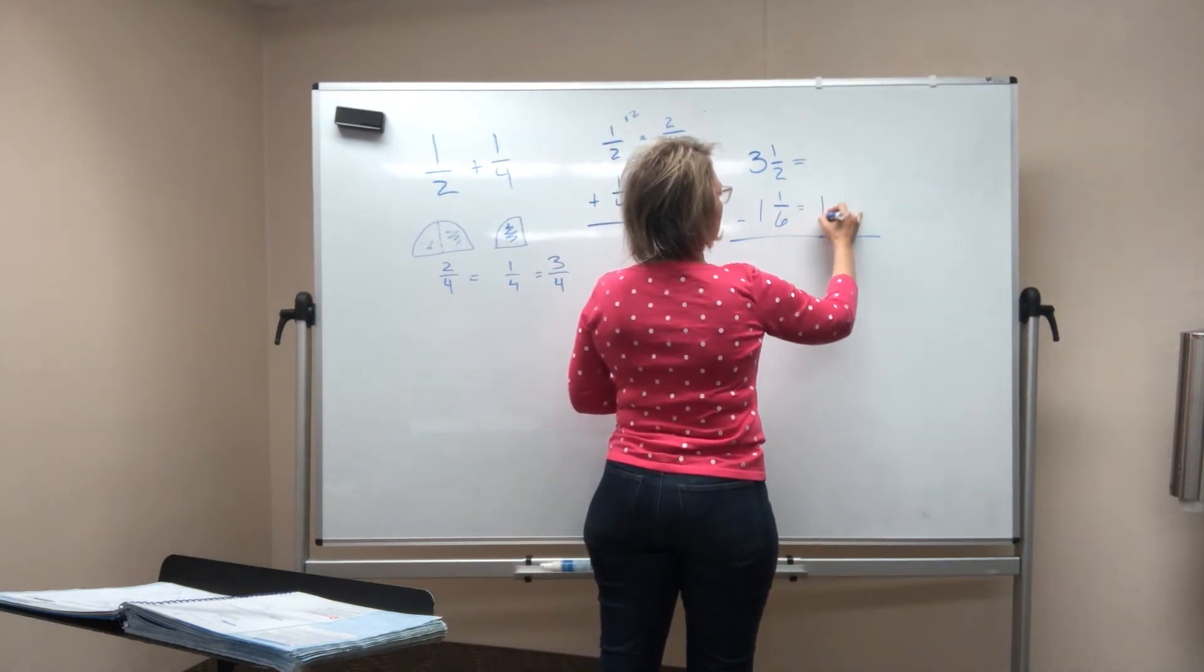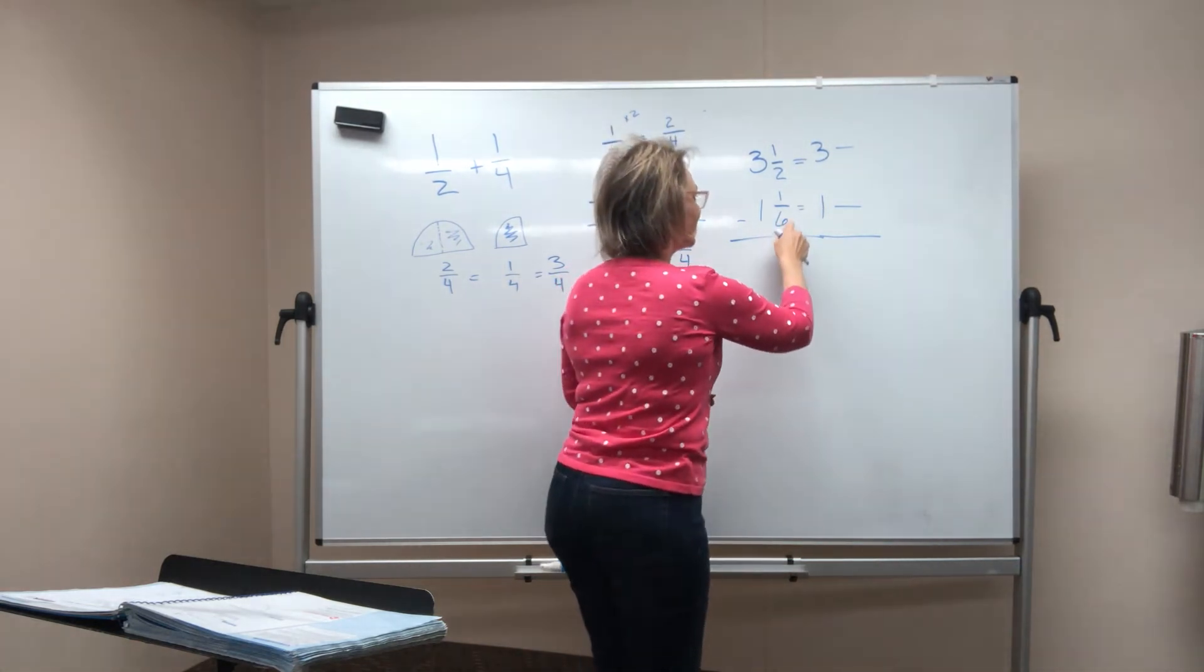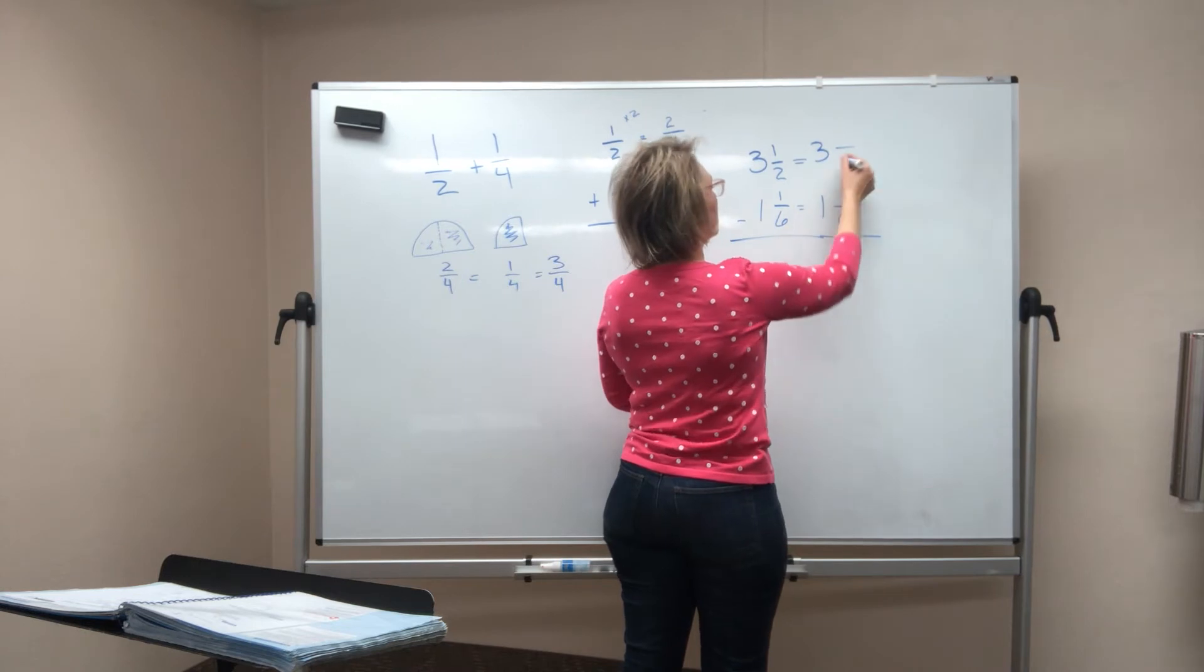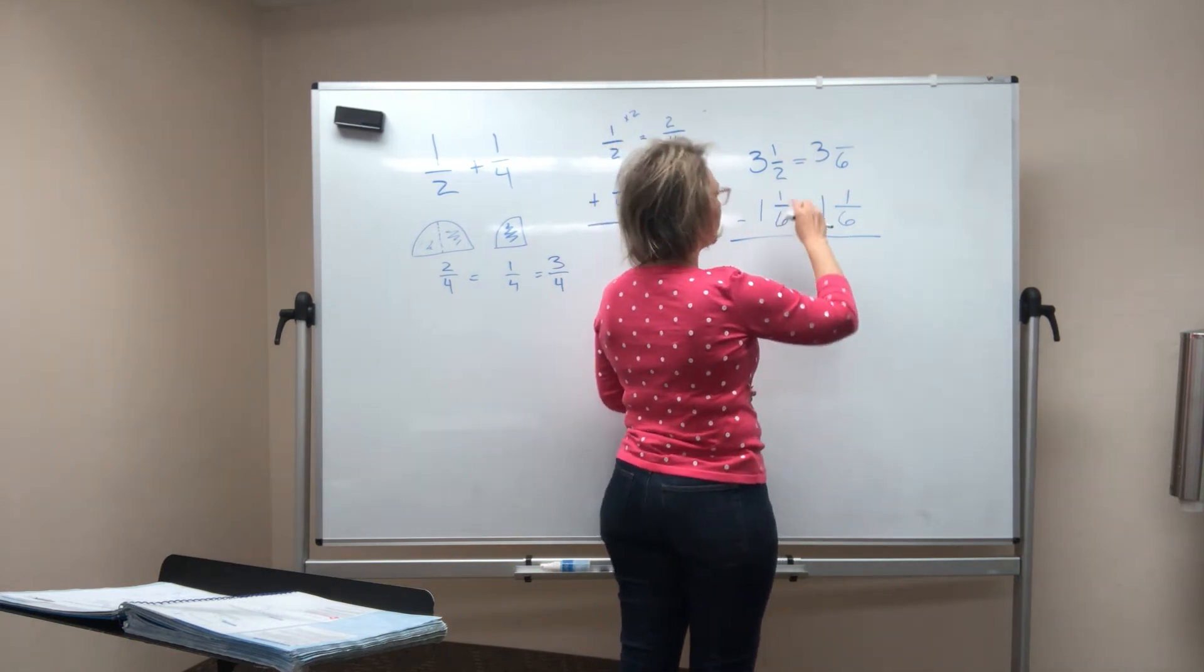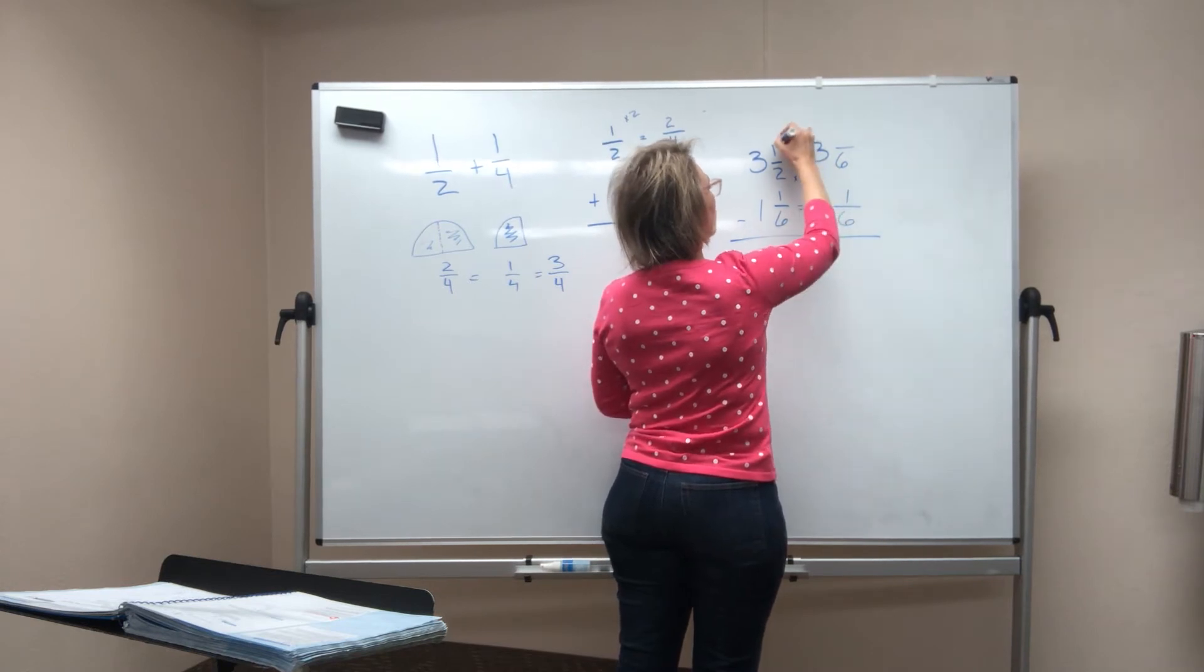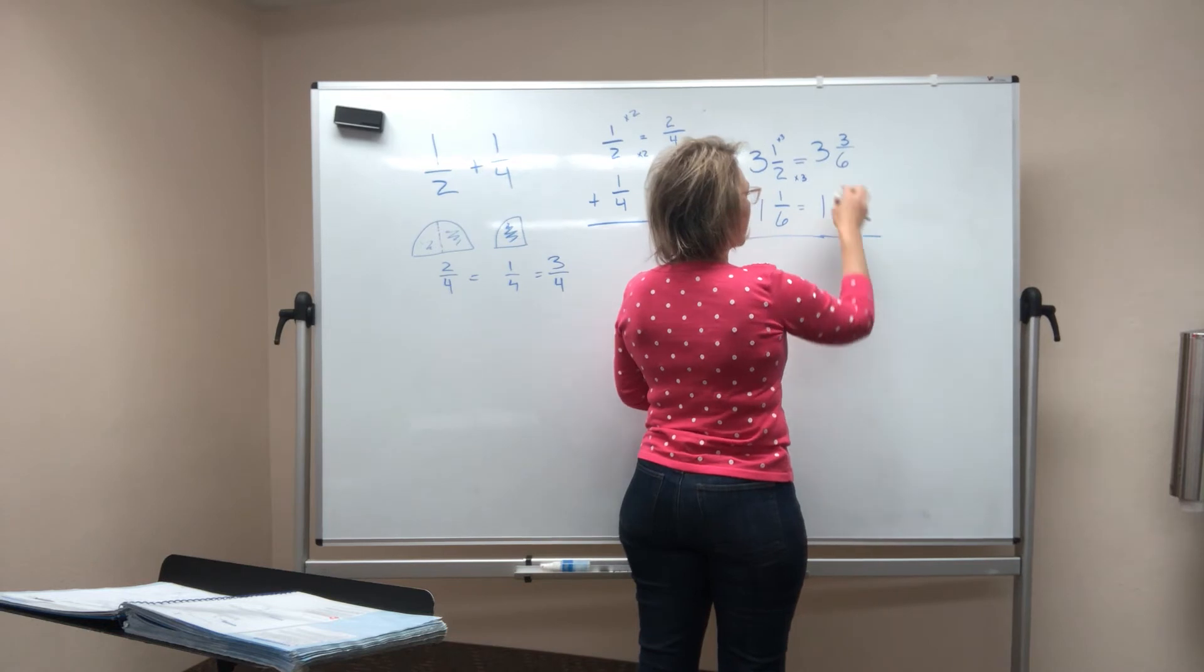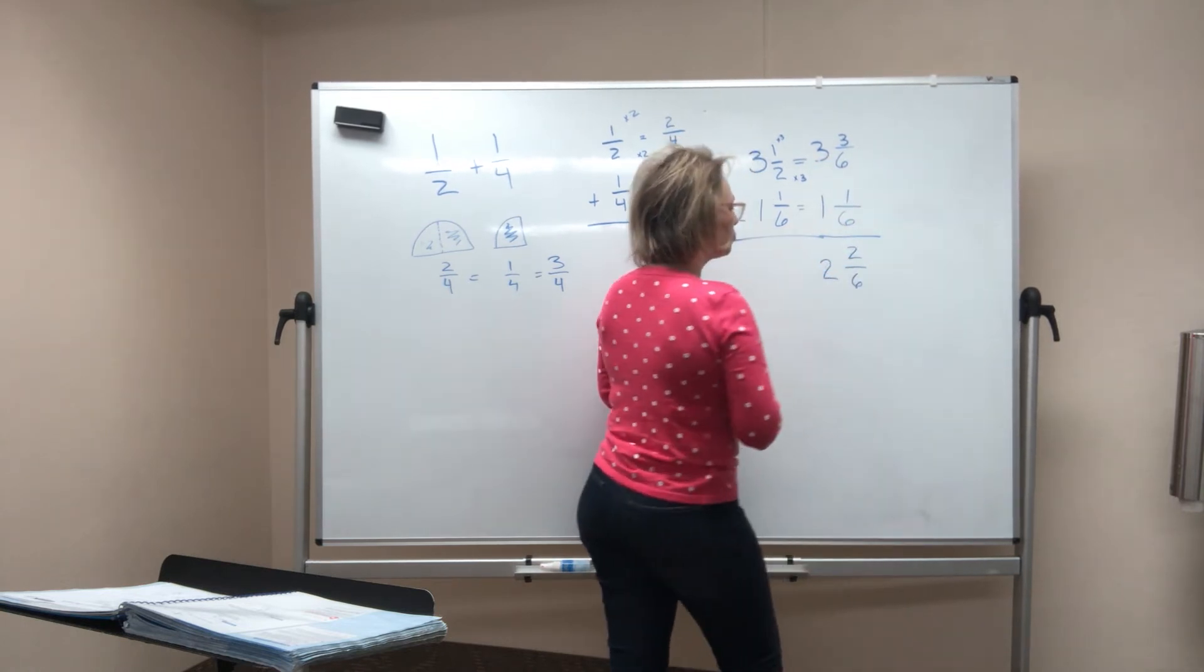All right. So we're going to write, our whole numbers just stay the same, but we've got to get these fractions to have the same denominator. What is the smallest number that both six and two will go into evenly? The smallest one that will go in evenly is six because six will go into six once, so that stays one sixth. But we've got to turn this two into six. What do I do to the two to make it be a six? I've got to multiply it by three. Two times three is six. So one times three is three. One half is the same as three sixths. Makes sense, right? So now I can subtract. What's three sixths minus one sixth? Two sixths. And now I can subtract the whole numbers. Three minus one is two. So two and two sixths.